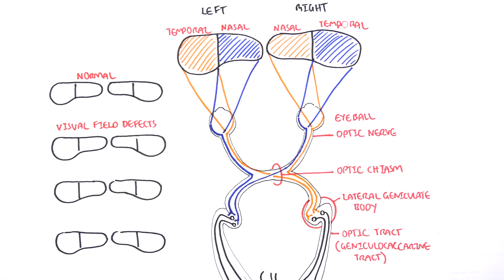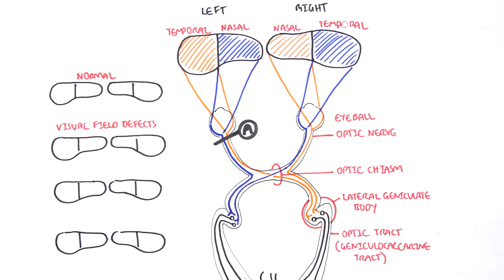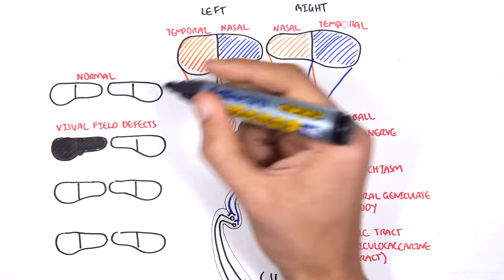If a lesion were to occur on the left optic nerve, A, what happens is that the orange and blue optic nerve on the left side cannot even bring the information down and so we get blindness in the left eye. This is called the left anopia.